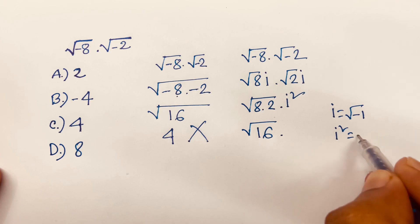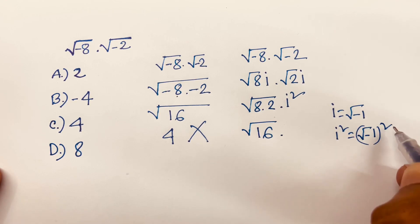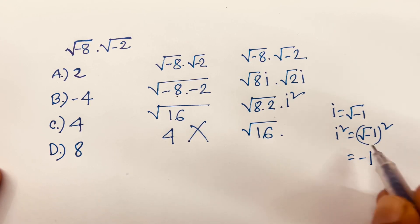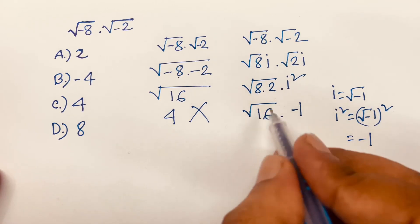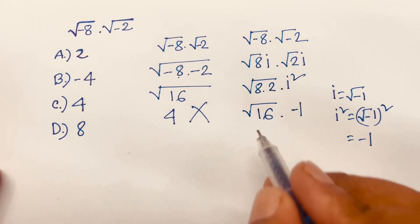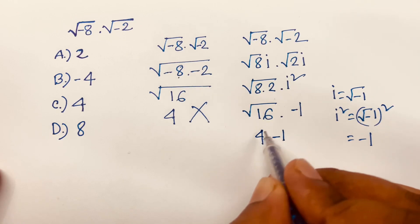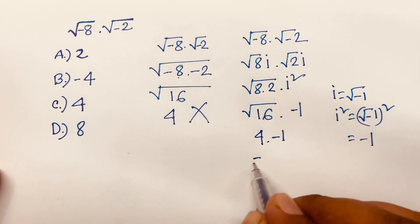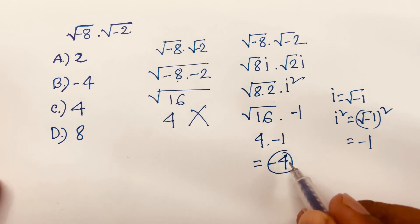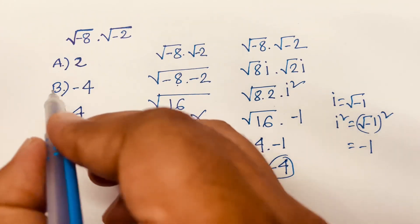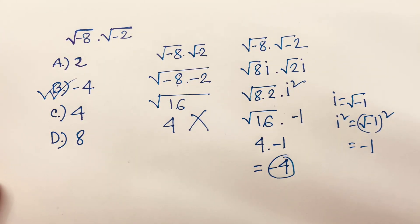We know that i equals square root of minus 1, so i squared equals (square root of minus 1) squared, which is minus 1. Therefore we have square root of 16 times minus 1, which gives 4 times minus 1, equals minus 4. So our final answer is minus 4 — option B is the correct answer.